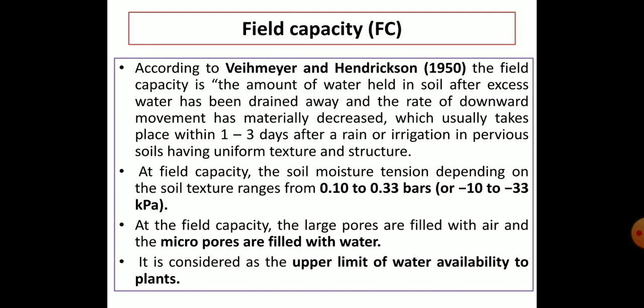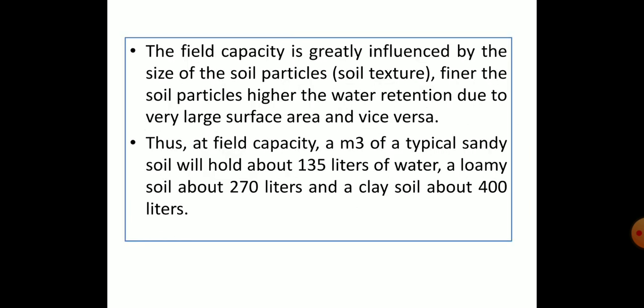Field capacity is considered as the upper limit of water availability to plants. Field capacity is greatly influenced by the size of soil particles. Finer soil particles have higher water retention power due to their very large surface area. At field capacity, a cubic meter of typically sandy soil will hold about 135 liters of water, a loamy soil will hold 270 liters, and a clay soil will hold around 400 liters. This difference is due to the change in texture.